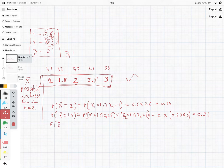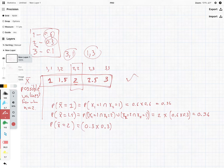The probability that x bar equals 2 is the situation where we have 2 and 2, plus the situations where we have 3 and 1, or 1 and 3. So we have 0.3 times 0.3, when both are equal to 2, plus the two situations where we have 1 and 3 or 3 and 1, which is 2 times 0.6 times 0.1. That gives us 0.21.